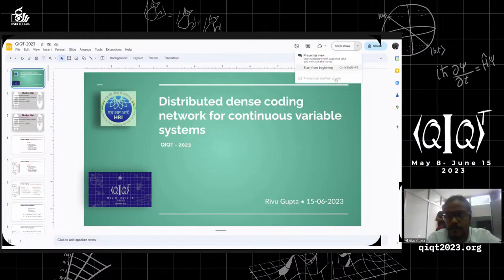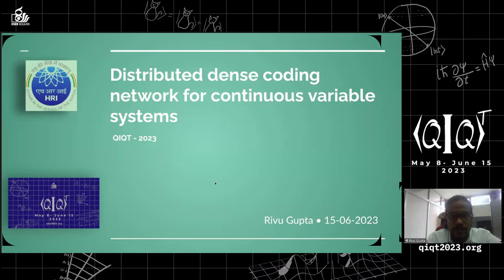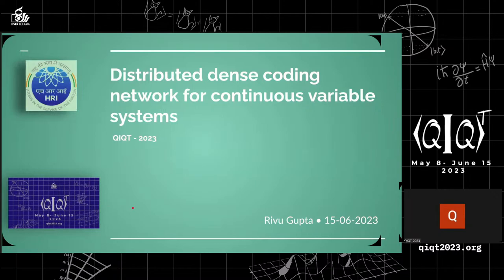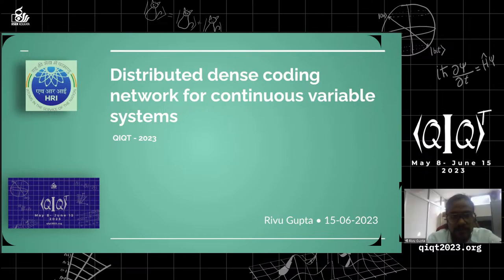Good afternoon everyone. Today we have Mr. Riva Gupta from Harishan Research Institute (HRI), currently pursuing his PhD there. His research interests mainly include quantum information, and today he'll be giving a talk on his work on distributed dense coding network for continuous variable systems. Thank you for the nice introduction and for giving me an opportunity to present my work at this conference.